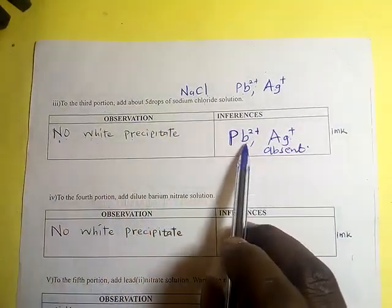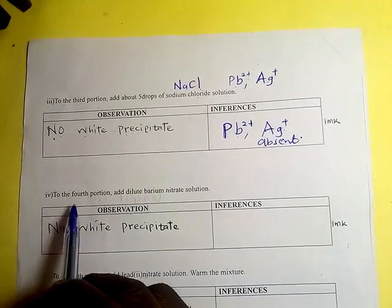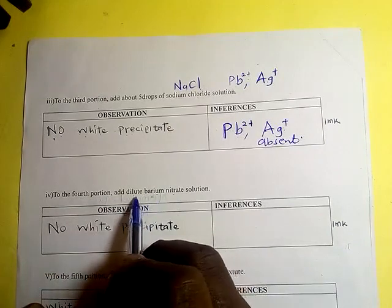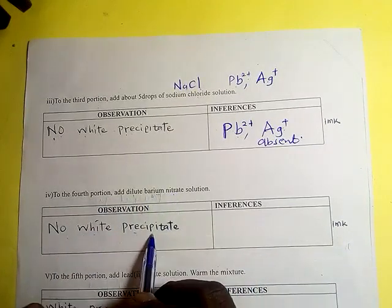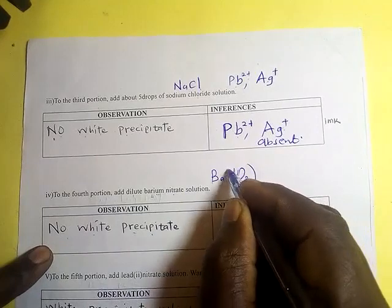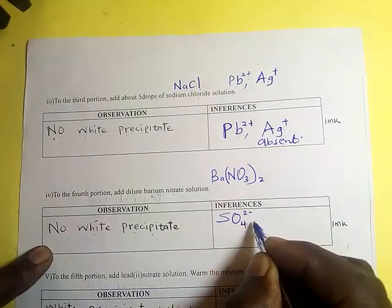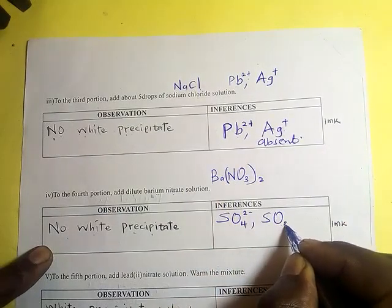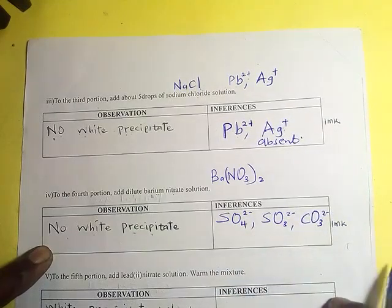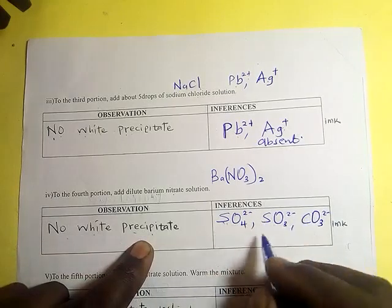To the fourth portion, add dilute barium nitrate. There is no white precipitate formed. Barium can form a white precipitate with sulfate, sulfite, and carbonate ions. Since there is no white precipitate, sulfate, sulfite, and carbonate ions are all absent.